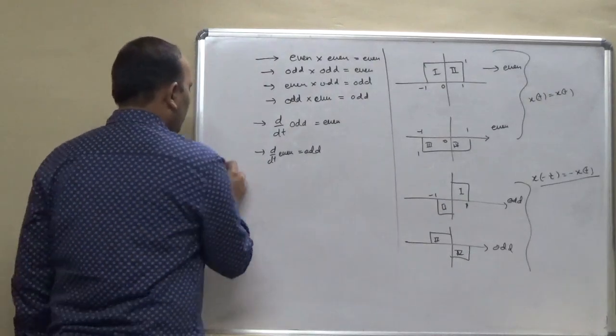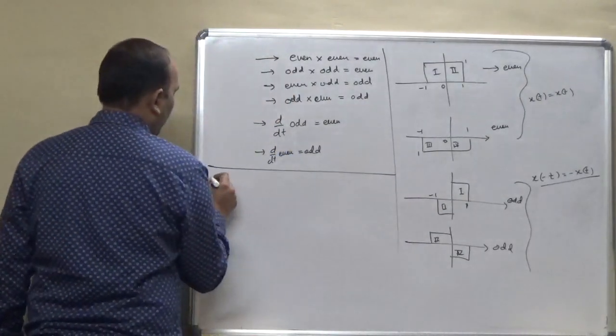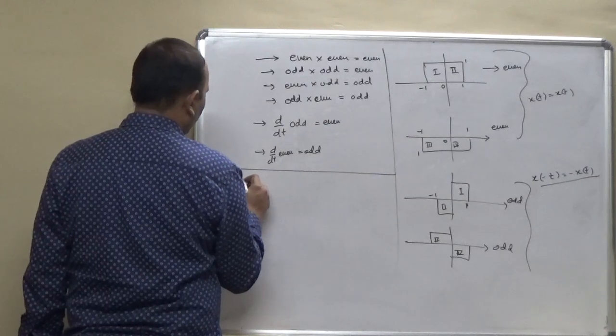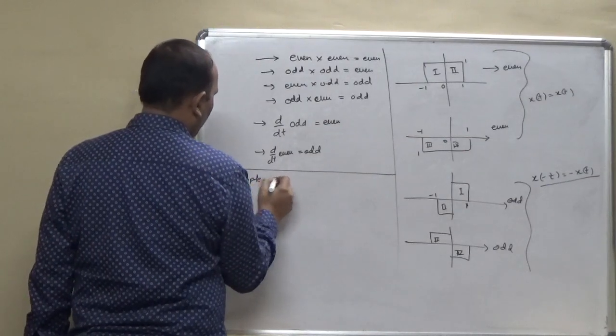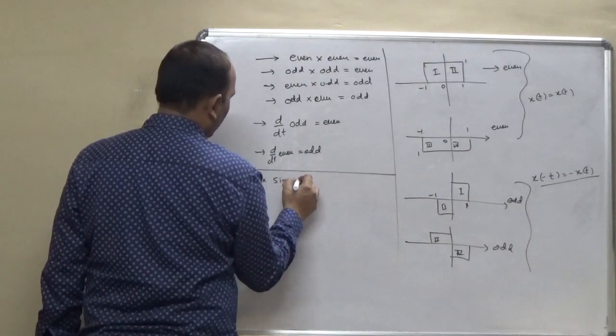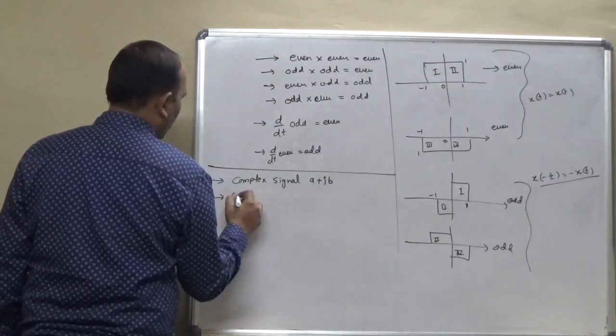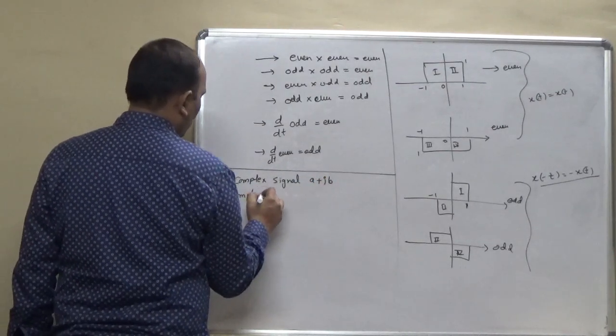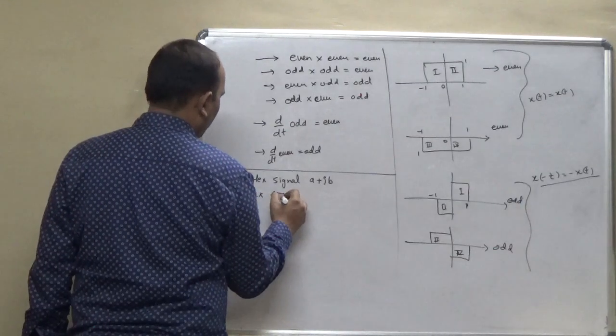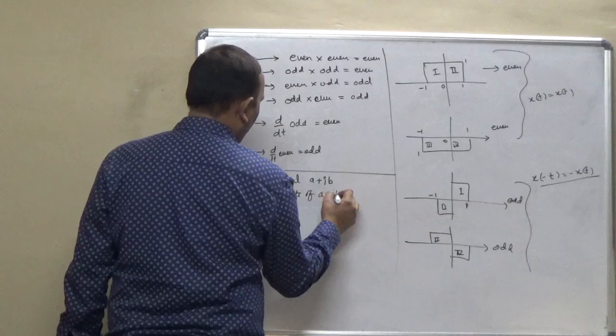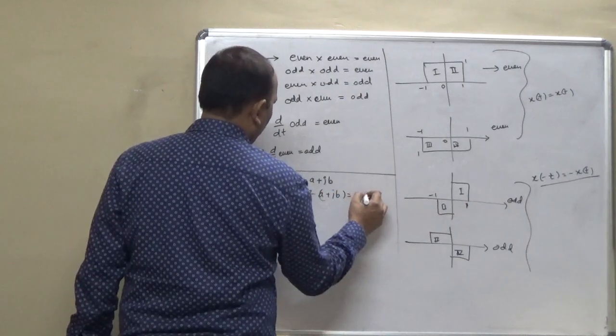And next one is the complex signals, even and odd condition for the complex signal. So, for the complex signal, a plus jb, complex conjugate of a plus jb is equal to a minus jb.